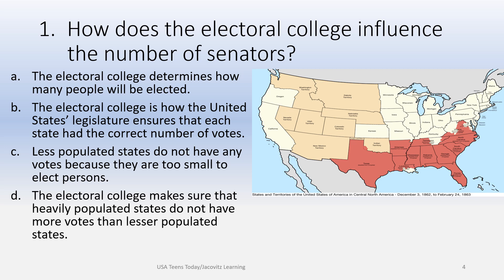Let's give you some choices here, like you'll have on the exam, with the same question: how does the Electoral College influence the number of senators? Listen to the language. Choice A: the Electoral College determines how many people will be elected — this is a possibility. Choice B: the Electoral College is how the United States legislature ensures that each state has the correct number of votes — this is a better answer.